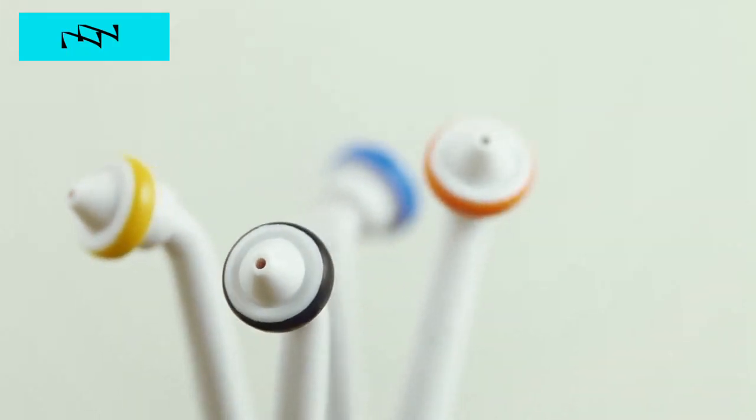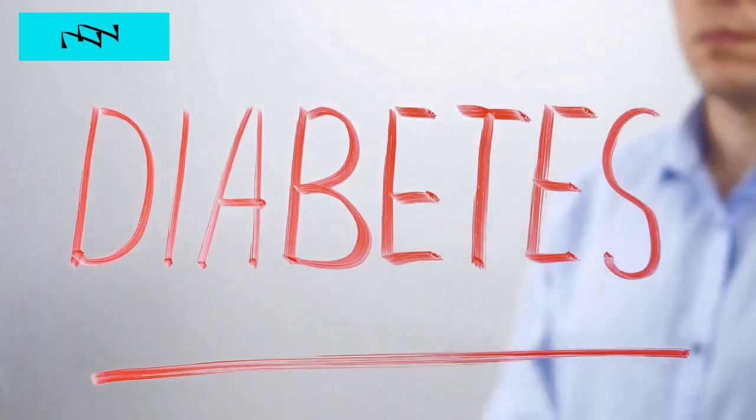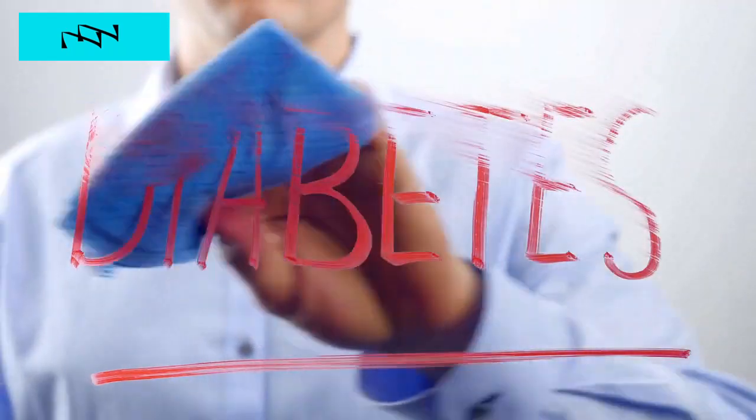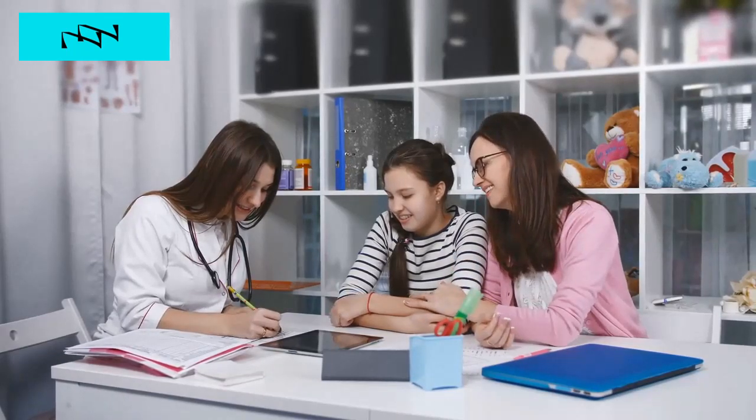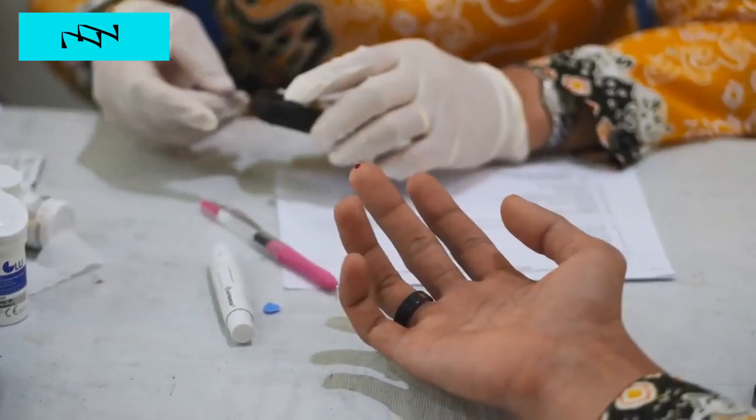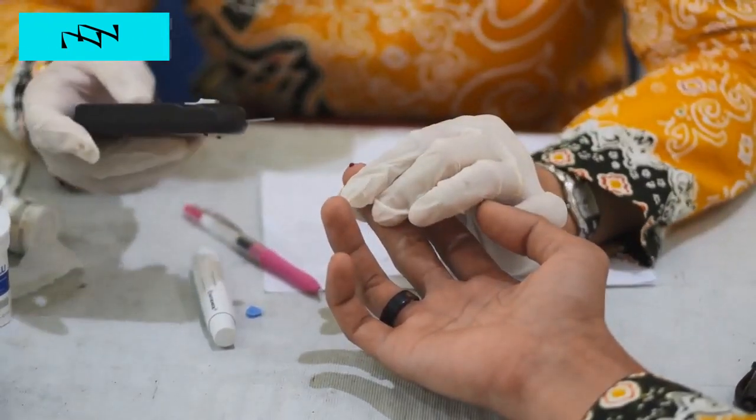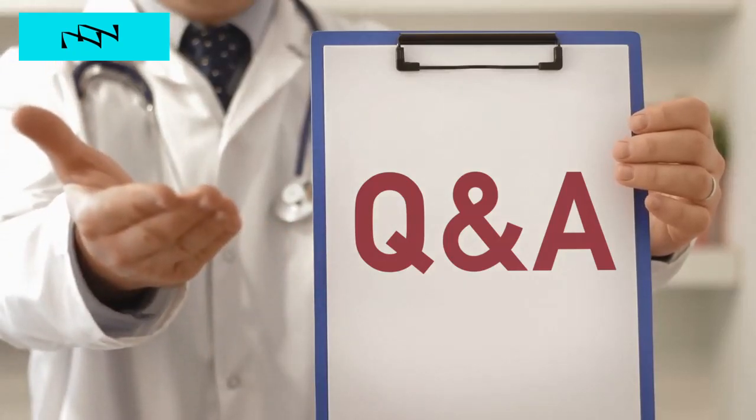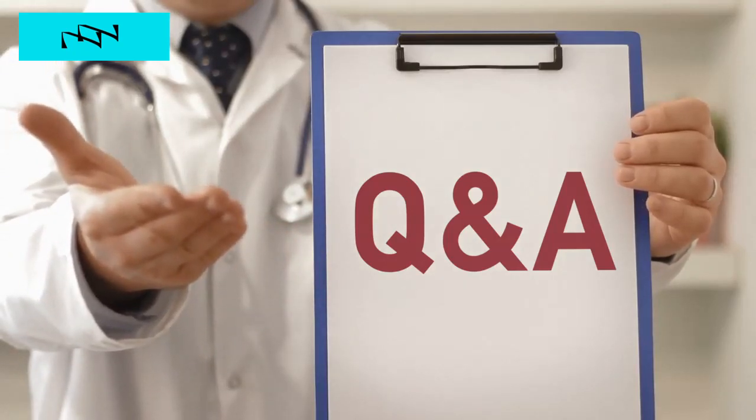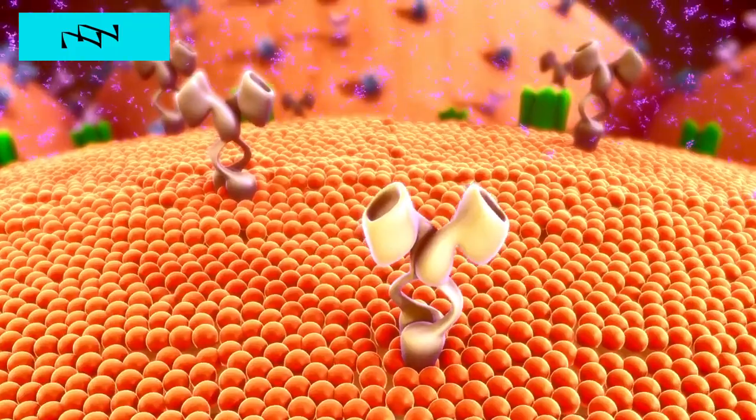The third tip is to stay informed and empowered. Knowledge is power when it comes to managing diabetes. Take the time to educate yourself about the condition, its symptoms, and treatment options. Stay up to date on the latest research and developments in diabetes care. Advocate for yourself and your health by asking questions, seeking second opinions, and being proactive in your care. Remember that you are your own best advocate, and by staying informed and empowered, you can take control of your health and live a longer and healthier life with diabetes.